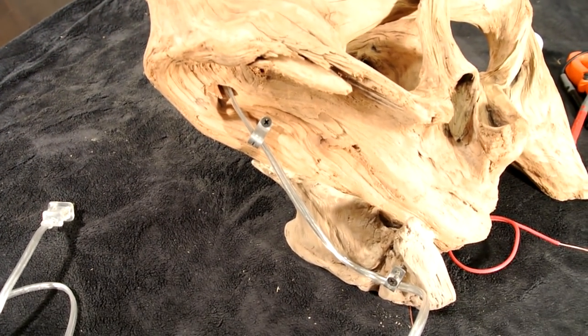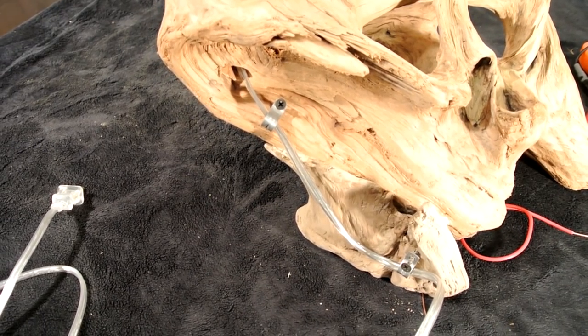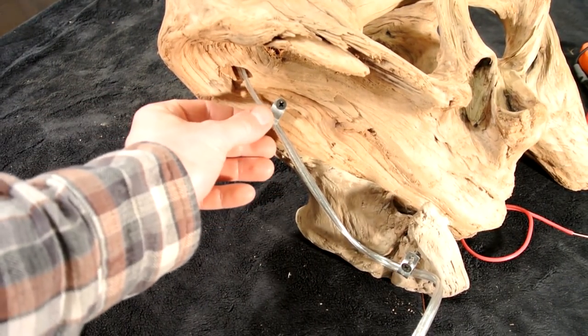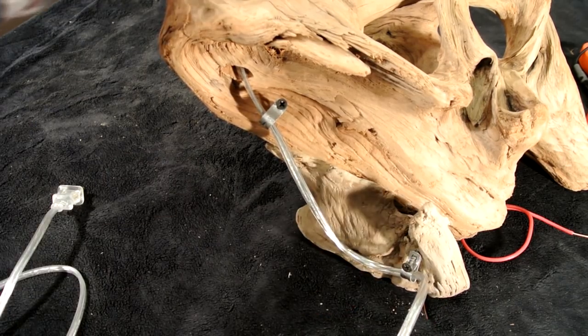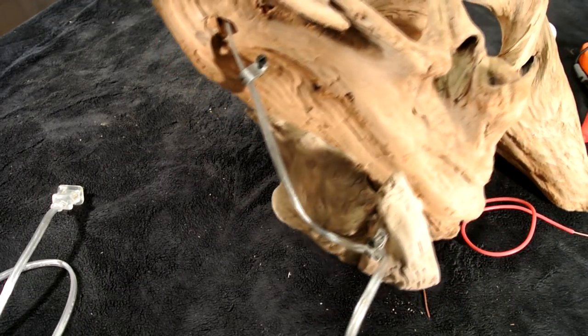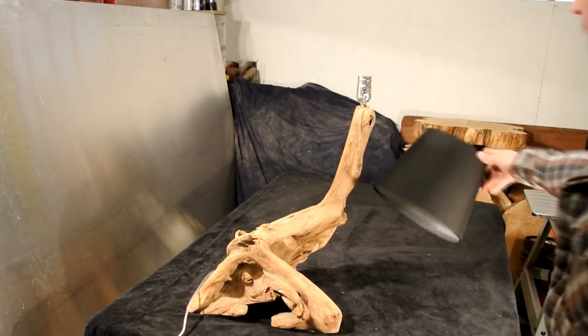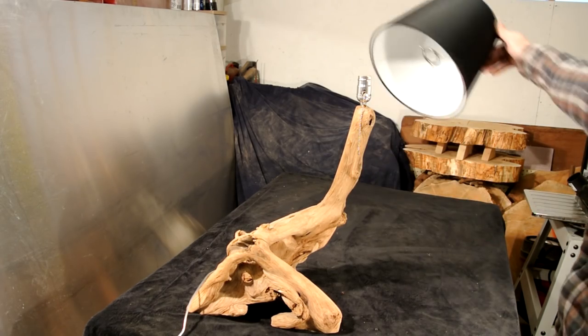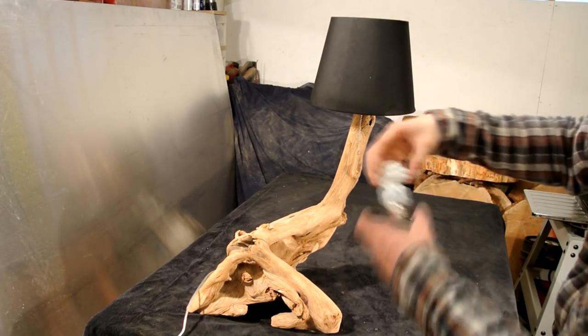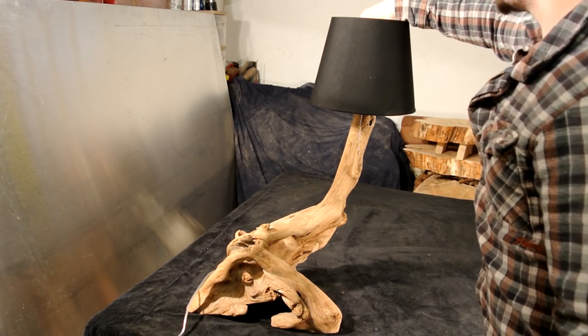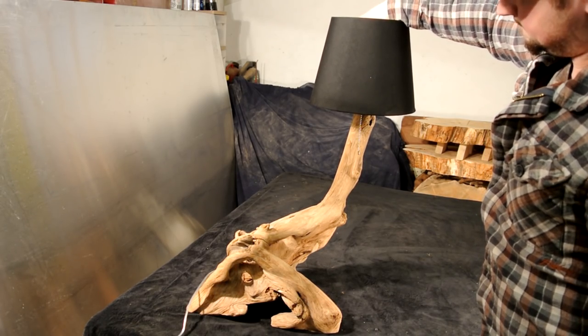I put some straps on the back side where the fixture wire comes out just to tidy things up, and we're ready to put the lampshade on. All the items I used in this video can be found at your local hardware store, but I'm also going to have links in the description to Amazon where you can buy these.